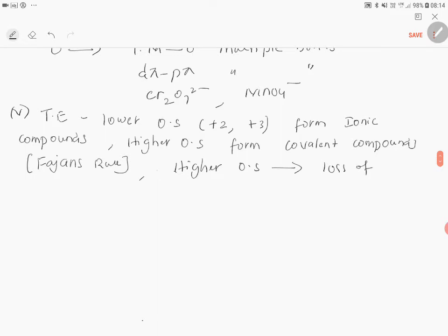N minus 1 d electrons. This is very important, for example in permanganate ion, and dichromate ion or chromate ion.